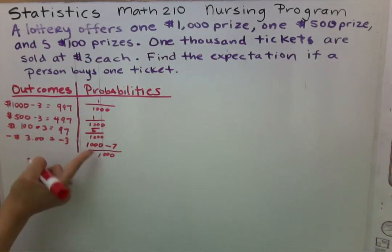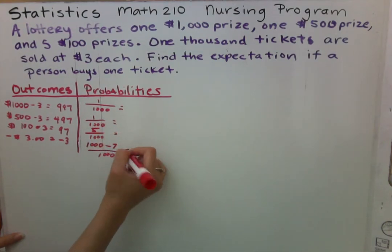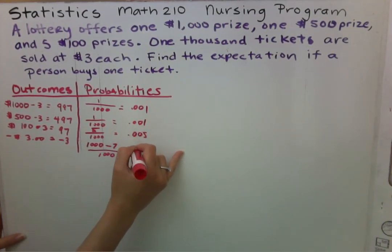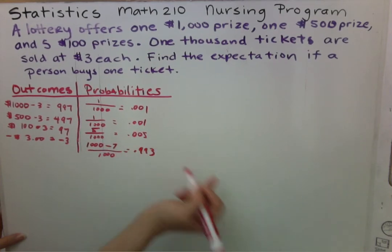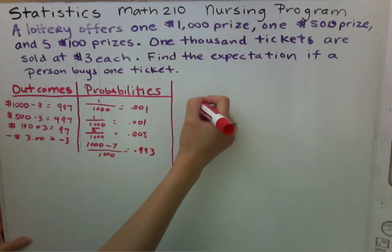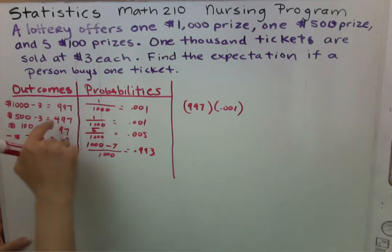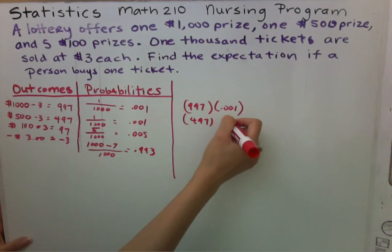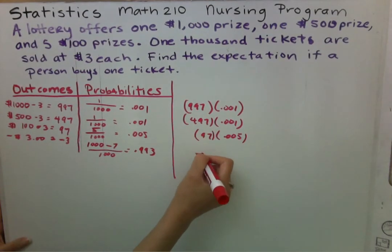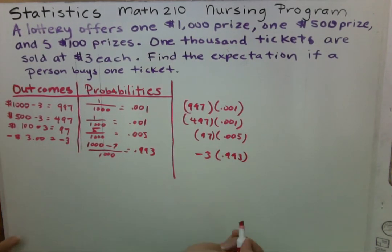Just a note that this thousand has nothing to do with a thousand dollars — it has to do with the thousand tickets being sold. Let's convert these values. In statistics you're allowed to use a calculator, so go ahead and calculate that out. Now we're going to multiply the outcome by the probabilities: we have 997 times 0.001, 497 times 0.001, 97 times 0.005, and negative 3 — remember, you're losing three dollars — times 0.993.